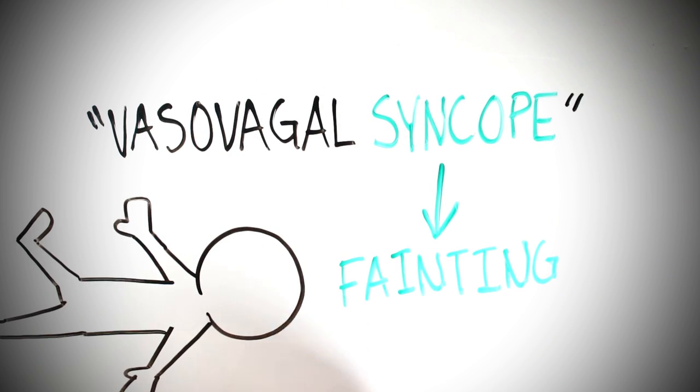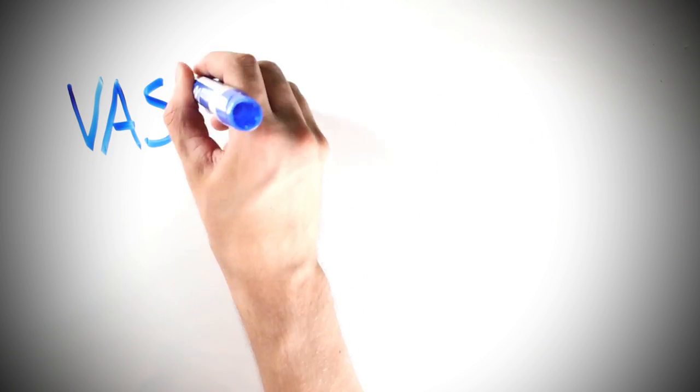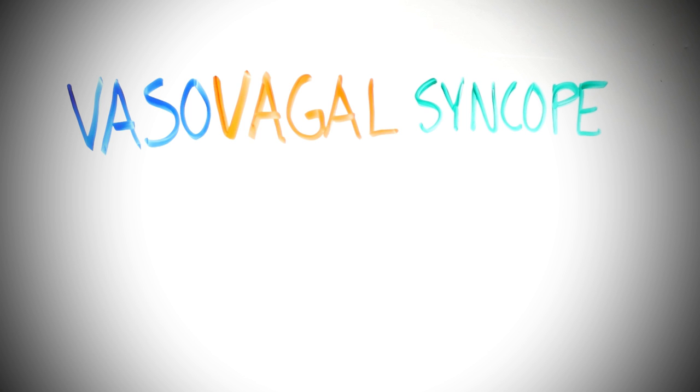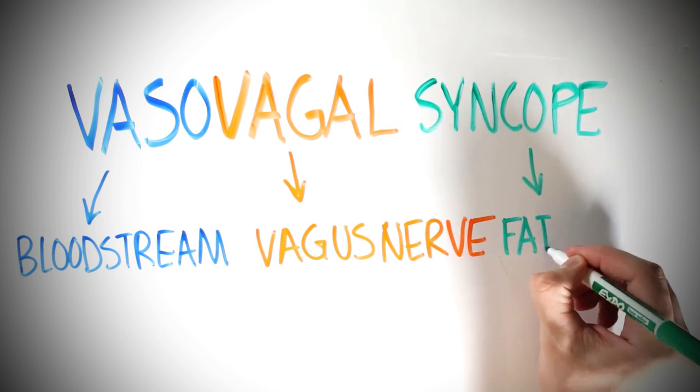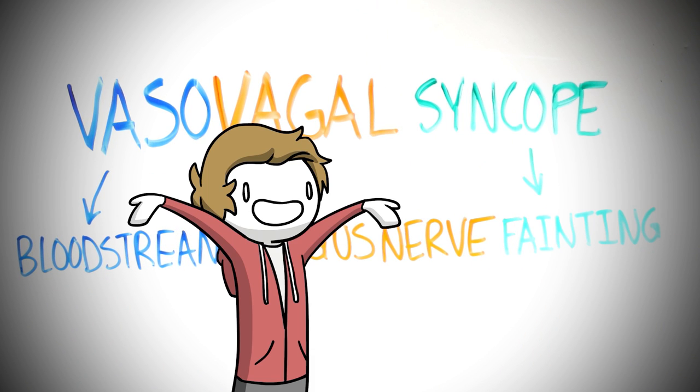And syncope is just a fancy word for fainting. So you put these three parts together and what do you get? Exactly! Bloodstream vagus nerve fainting. It all makes sense now, right?